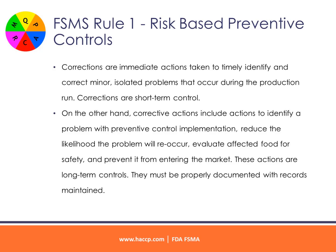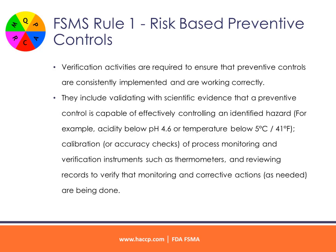Corrections are immediate actions taken to timely identify and correct minor, isolated problems that occur during the production run — these are short-term controls. Corrective actions, on the other hand, include actions to identify a problem with preventive control implementation, reduce the likelihood the problem will reoccur, evaluate affected food for safety, and prevent it from entering the market — these are long-term controls that must be properly documented with records maintained. Verification activities are required to ensure that preventive controls are consistently implemented and working correctly. They include validating with scientific evidence that a preventive control is capable of effectively controlling an identified hazard — for example, acidity below a pH of 4.6 or temperature below 5 degrees Celsius or 41 degrees Fahrenheit — as well as calibration or accuracy checks of process monitoring and verification instruments such as thermometers, and reviewing records to verify that monitoring and corrective actions are being done.